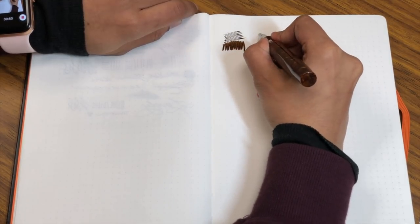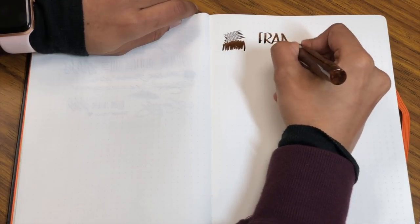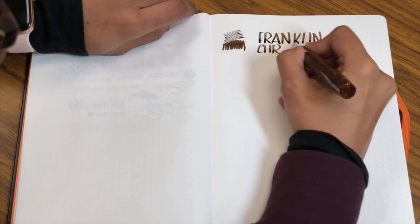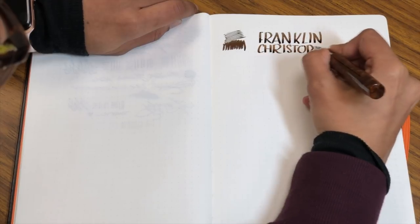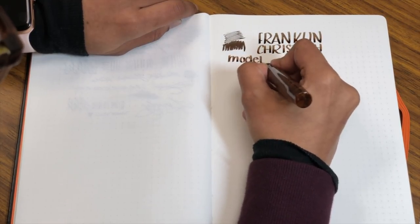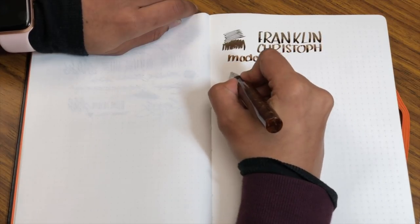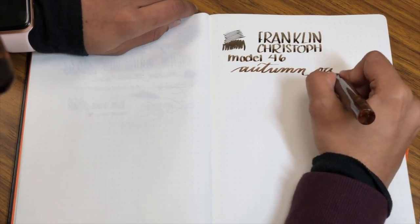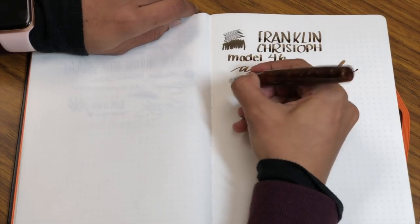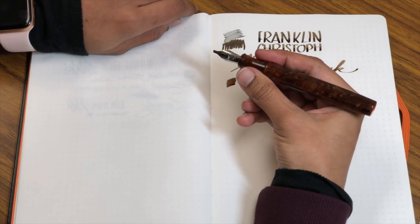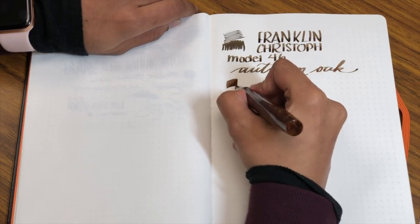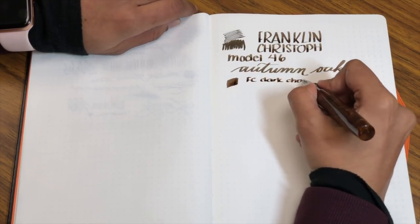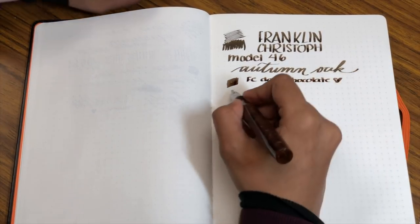This is the Franklin Christoff Music nib. I'm just doing some wild block lettering here. Perhaps not the sexiest of handwriting, but you will survive, I am sure. Model 46. And in case you're worried, yes, you can still use this ridiculous nib for cursive. It's just that two words will fill your line. Autumn Oak. Super pretty. It's like a dark autumn, kind of freaky brown. I love it. It makes me hungry. And the ink is Franklin Christoff Dark chocolate. Super pretty.